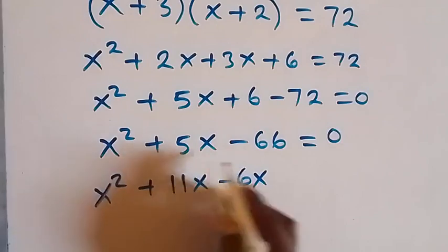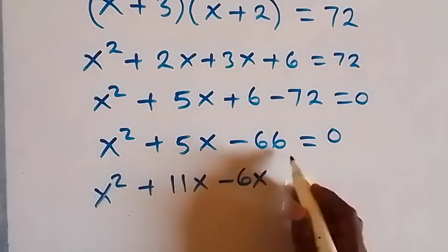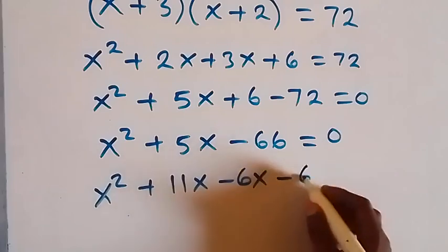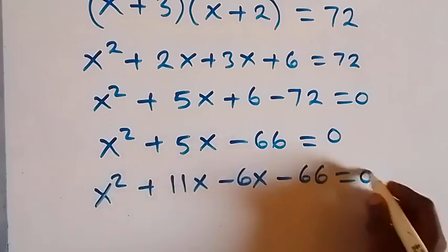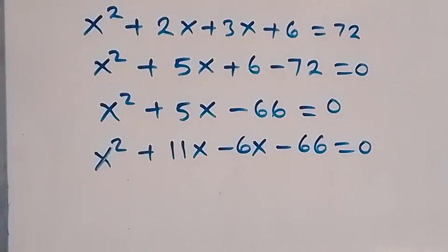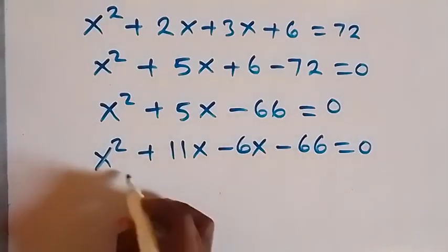which gives us plus 5x, and when we multiply we get minus 66, so minus 66 equals zero. From here we can factor this into two parts